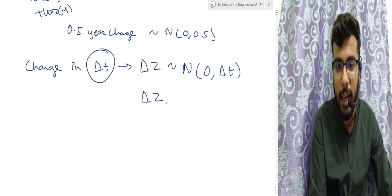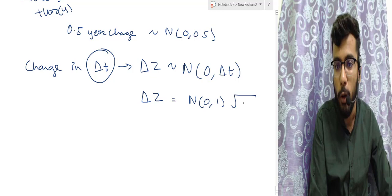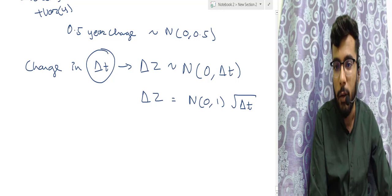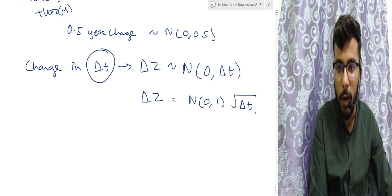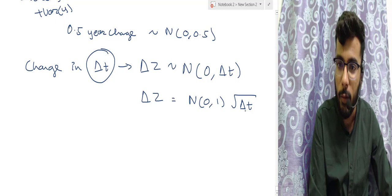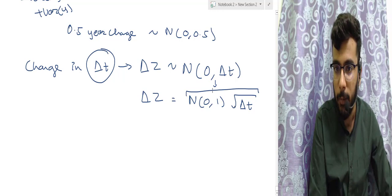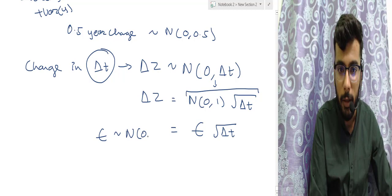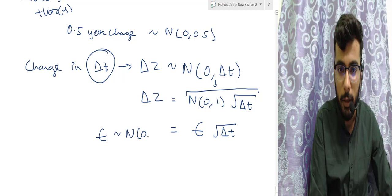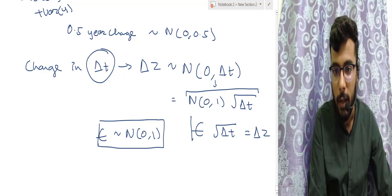We can write δZ as a normal(0,1) distribution multiplied by √(δt). Multiplying by √(δt), the mean stays 0 and the variance is multiplied by the square of that constant, giving variance δt. So δZ = ε × √(δt), where ε has a standard normal distribution N(0,1). Just remember this.